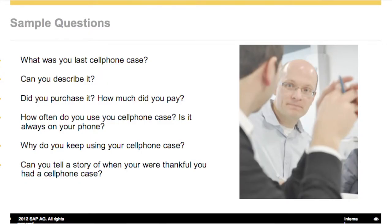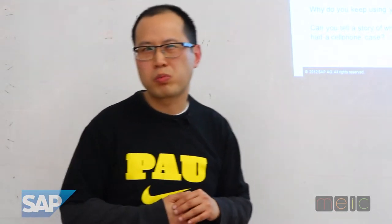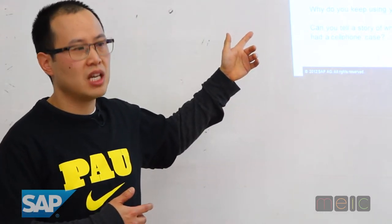Let's take a look at some sample questions using a cell phone case. If I were doing design thinking user interviews, I would say something specific like 'What was your last cell phone case?' — not 'Tell me about a cell phone case you had,' because they might sit and pick one or the other. Being specific tends to elicit more information; they'll remember that particular case and give you more detail. I'd also say 'Can you describe it?' rather than 'Is it black?' — that opens things up and allows serendipity and their story to come in.